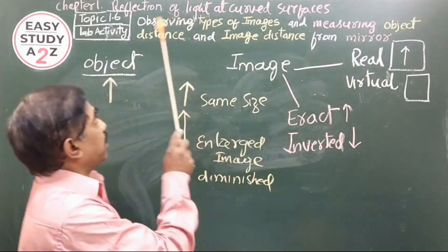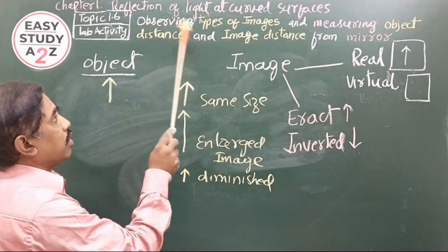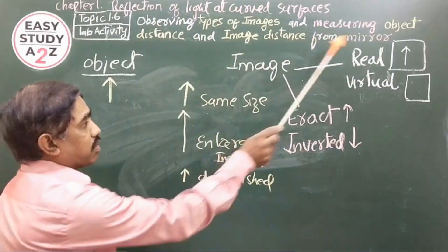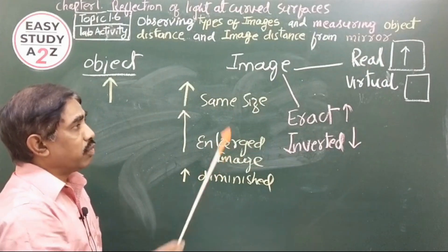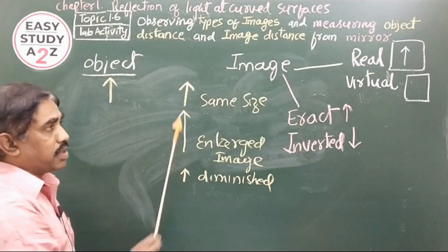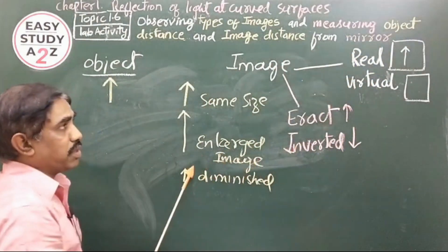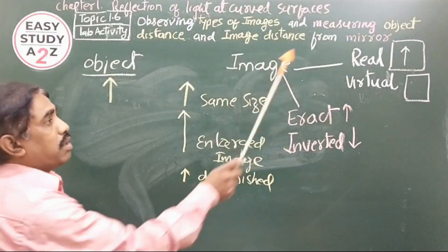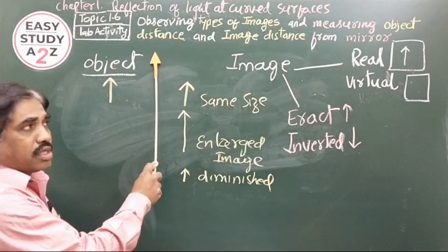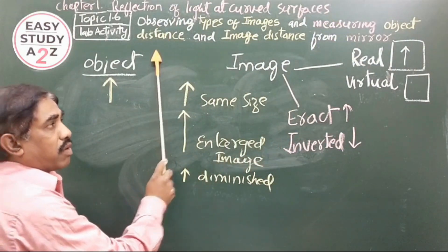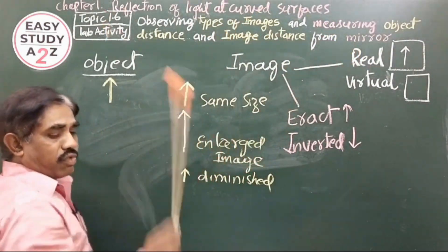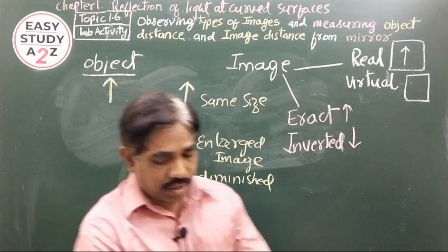In the experiment, we will observe all these types of images by measuring the object distance from the mirror and image distance from the mirror.